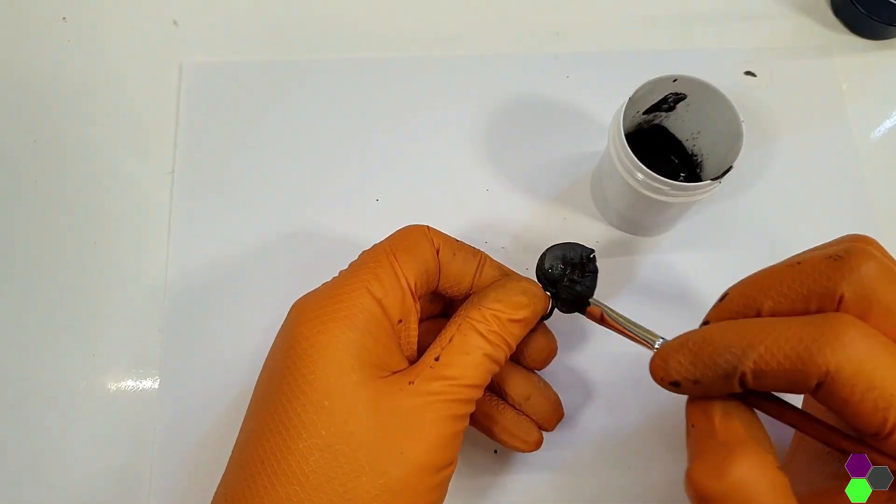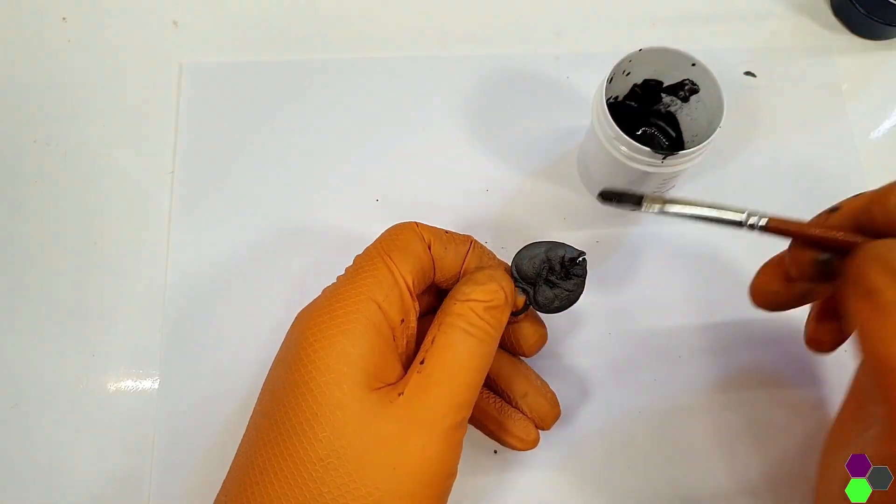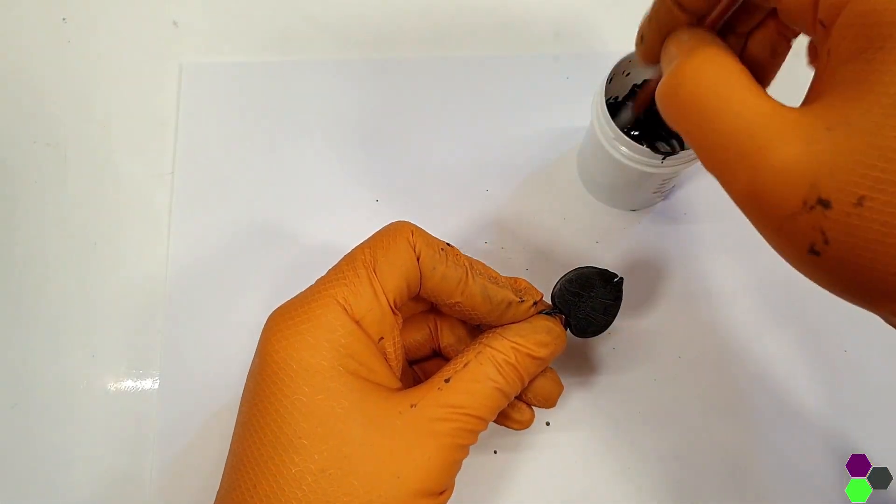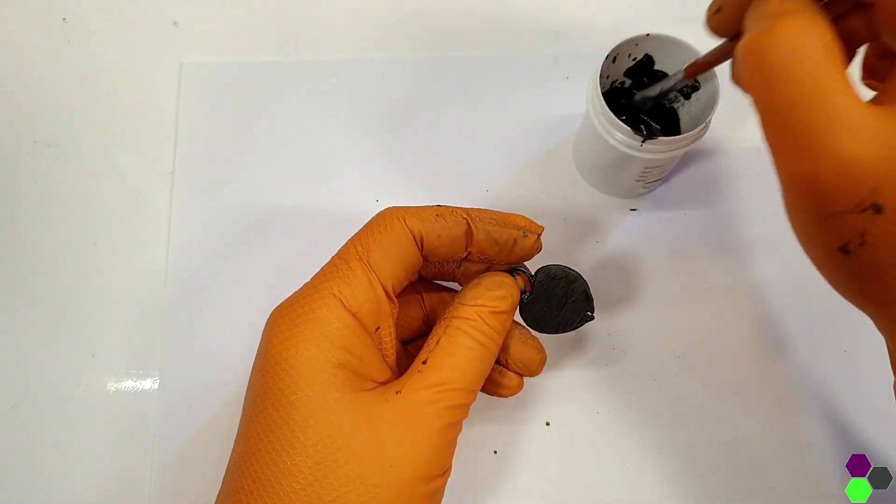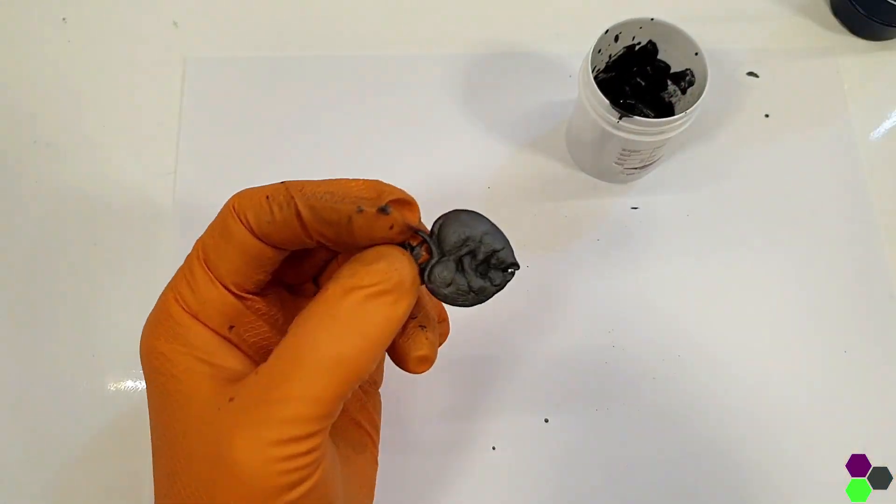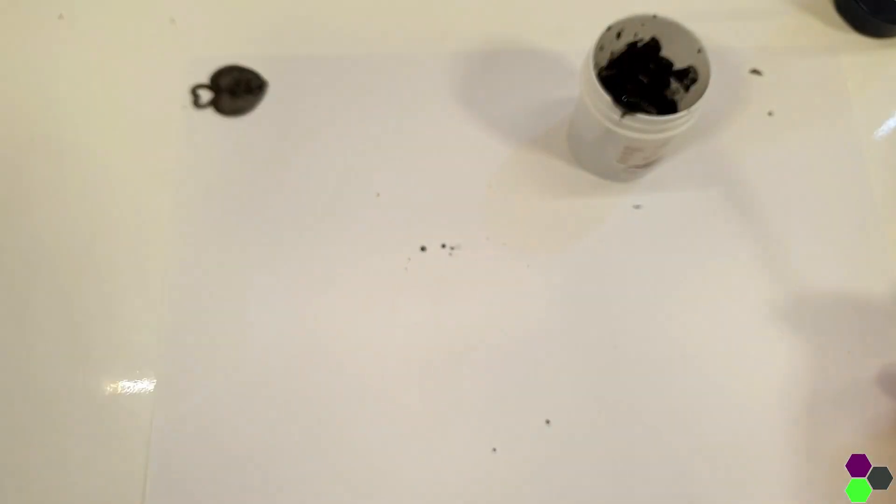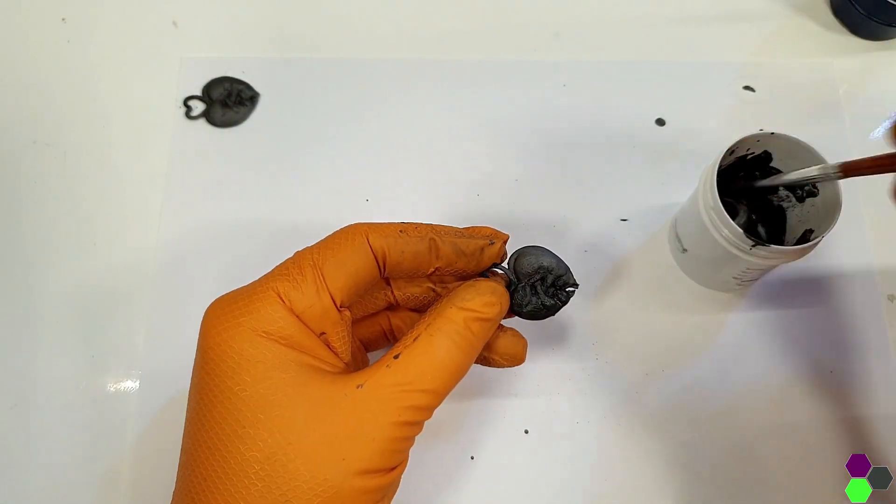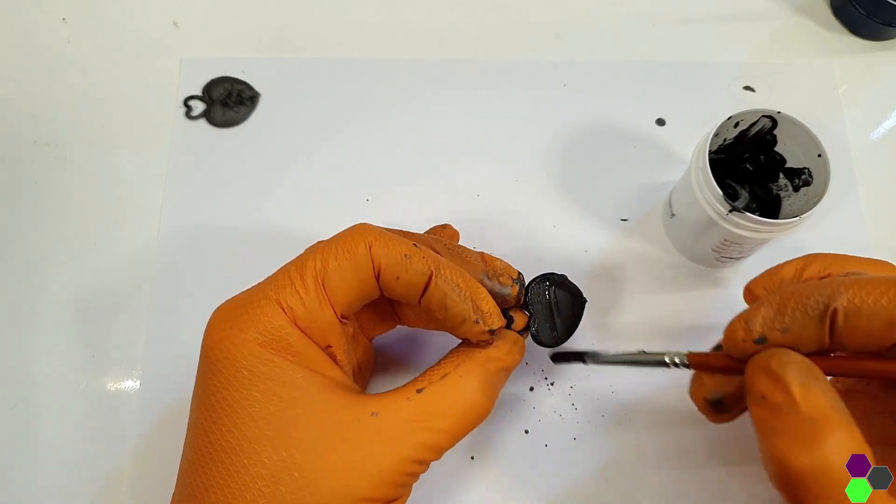If you're plating a 3D print or another non-conductive object you'll need to give it a conductive coating. I've covered how to do this in my previous video which I'll put a link to in the description. Once the part is prepped it's important to keep it clean and not touch it with your bare hands. Any oils or other substances on the surface will interfere with the plating process.